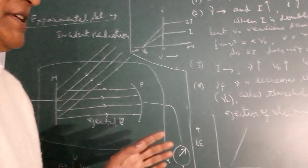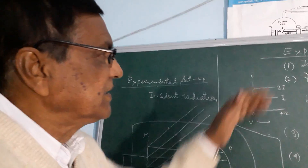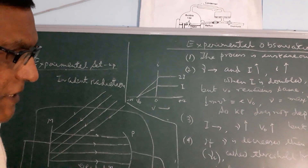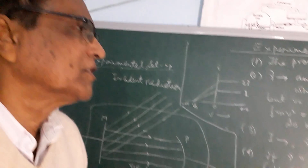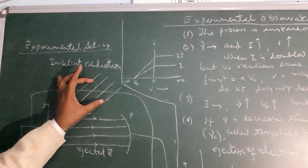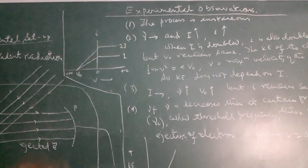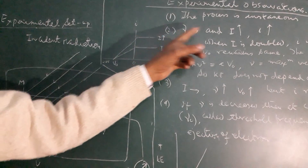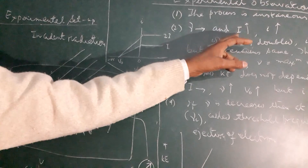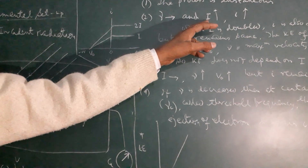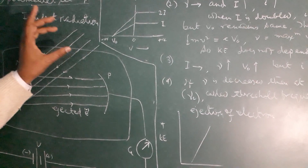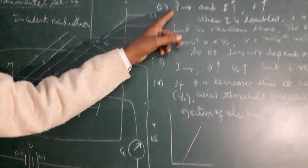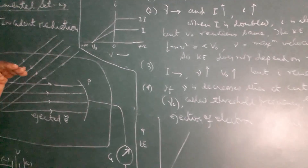Classical mechanics and the classical theory of radiation fail to explain all four experimental observations. In classical theory of electromagnetic radiation, the energy of a light beam depends on both intensity and frequency — these are the two characteristic features. Higher intensity means a more energetic light beam, and frequency relates to the shorter wavelength and more penetrating nature of the light.